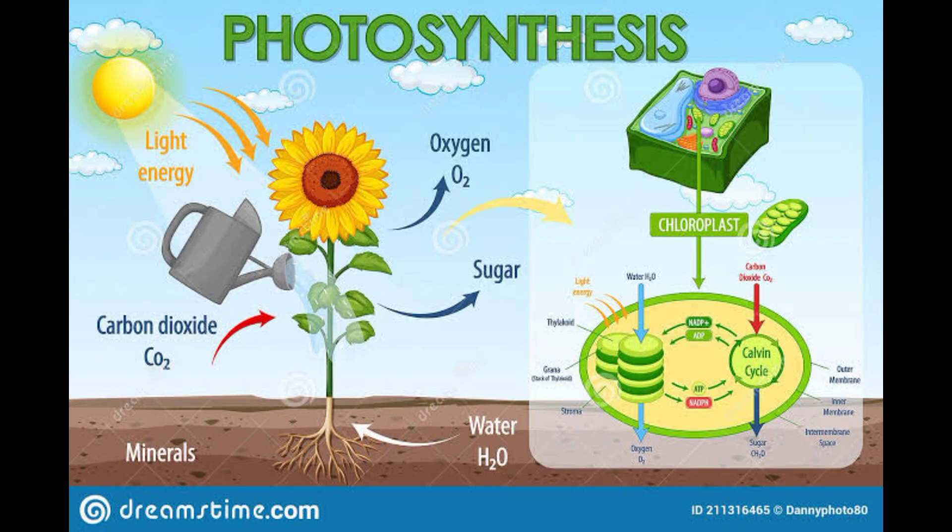Photosynthesis is the process by which plants, algae, and some bacteria convert light energy into chemical energy in the form of glucose, or sugar.